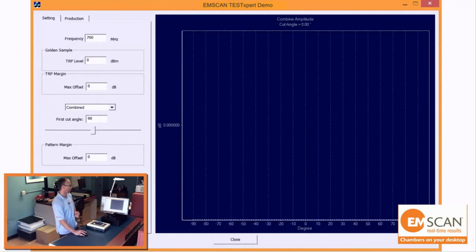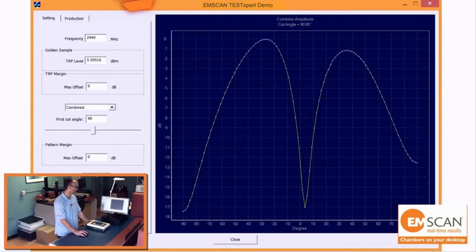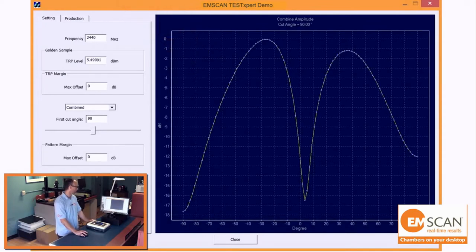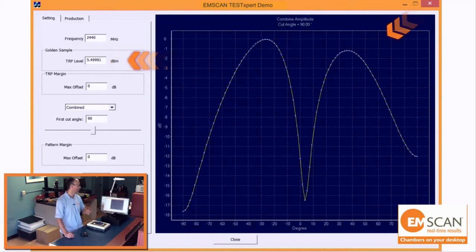With those different parameters set up, we'll do a single test and turn on the device. We're running a single test on our golden device. Here we can instantly see some results for radiated power and pattern level given that one cut that we're interested in.